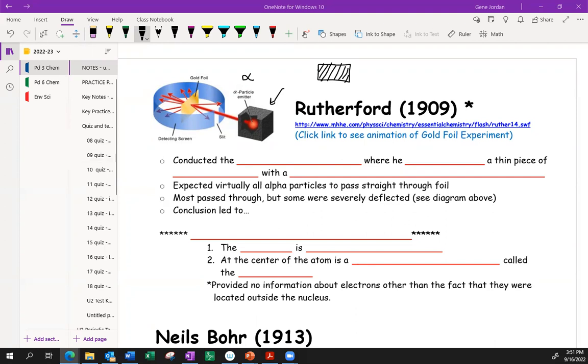So that's Rutherford's experiment. This is the things you have to know. It was a gold foil, very thin, and he bombarded it with particles that he discovered, alpha particles. A thin piece of foil with a positive stream of alpha particles. He expected all the alpha particles to go through, but as you saw, most passed through, but some didn't. What conclusions did he get down to?